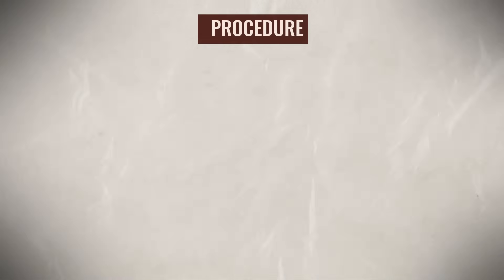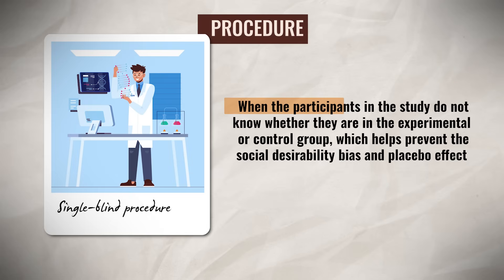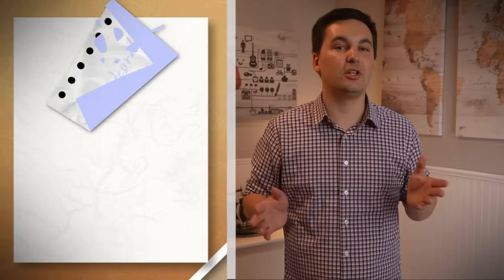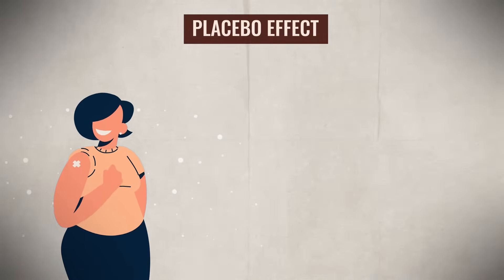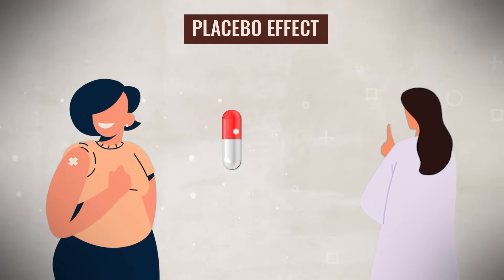Researchers can use either a single-blind or double-blind procedure. A single-blind procedure is when the participants do not know whether they are in the experimental or control group, which helps prevent social desirability bias — where participants skew their answers to create a more favorable impression — and the placebo effect, where an individual's physical or mental state improves after taking a placebo because they believe they are receiving the real substance. The single-blind procedure keeps participants unaware of their group, reducing the chance of participant bias.